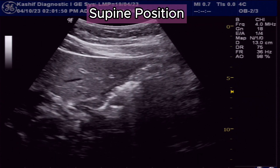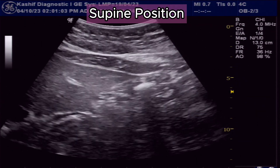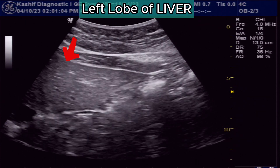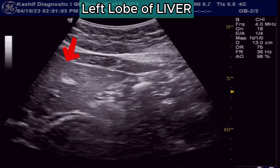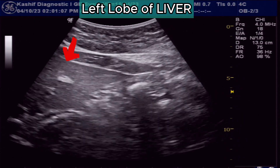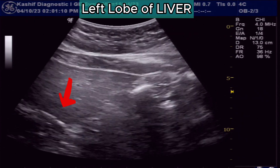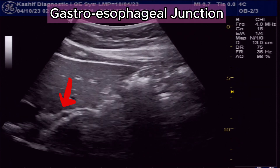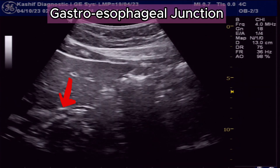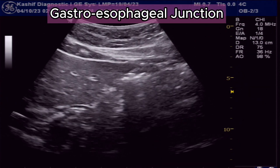In this case the patient position is supine. The left lobe of the liver is visualized. Posterior to the left lobe of the liver we see a tube-like structure — this is the gastroesophageal junction.